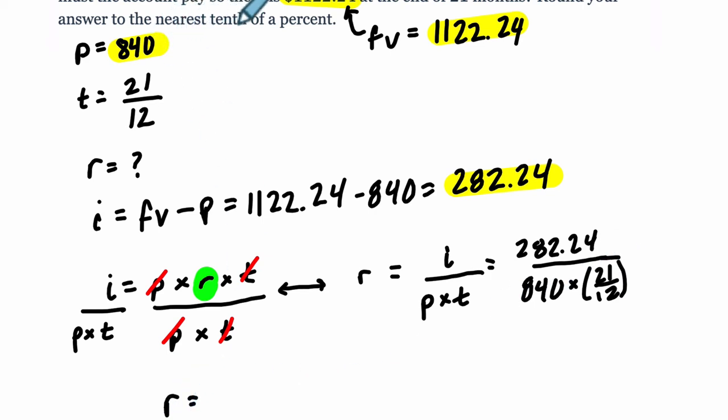And we want to get to the nearest tenth of a percent. So this will give us a rate as a decimal. We're going to do the rate, whatever rate we get here, times 100. And then we're going to round that to the nearest tenth of a percent.